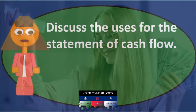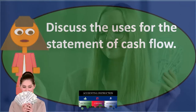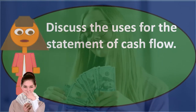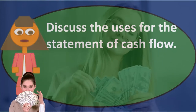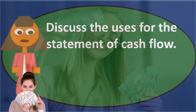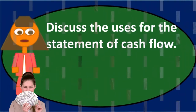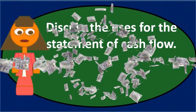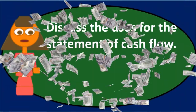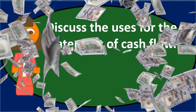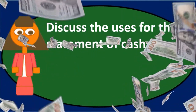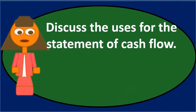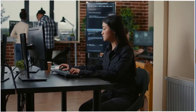The statement of cash flows is one of our major financial statements. It's going to be a financial statement included with the balance sheet, the income statement, and the statement of equity. The statement of cash flows will report the cash flows, and it's going to have three major categories: operating activities, investing activities, and financing activities.